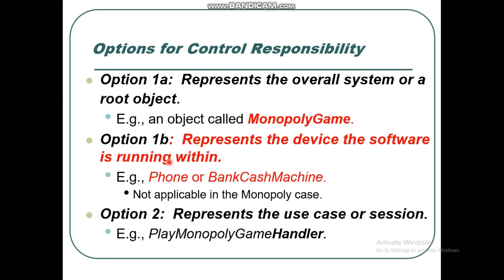Option 1b represents the device the software is running within — consider which class you will assign responsibility to represent the device the software is running on. For example, a phone or bank cash machine. However, this option is not applicable in the Monopoly case.